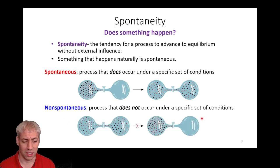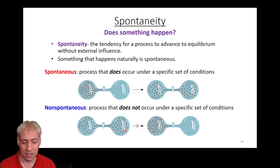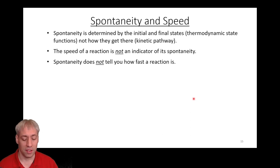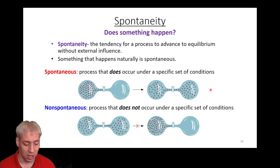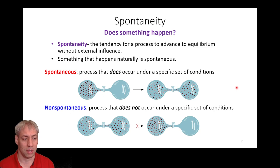A non-spontaneous process does not occur under a specified set of conditions. Think about the reverse: two chambers filled with gas spontaneously going back to one side — that doesn't happen. You will never get that gas back into the single chamber spontaneously. So while expansion is spontaneous, contraction is non-spontaneous. It seems like a trivial definition but it's really important: with chemical reactions, will the reaction occur? If yes, it's spontaneous; if no, it's non-spontaneous.